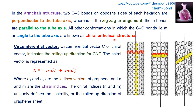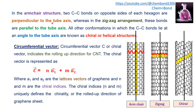Armchair, zigzag, and chiral carbon nanotubes are classified on the basis of the carbon-carbon bond orientation relative to the tube axis. In the armchair structure, the two carbon-carbon bonds on opposite sides of each hexagon are perpendicular to the tube axis — making a 90° angle with it. In the zigzag arrangement, these opposite bonds are parallel to the tube axis.